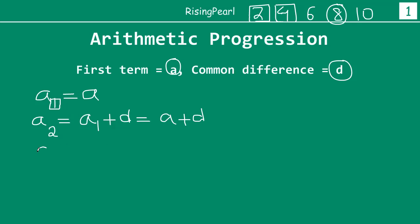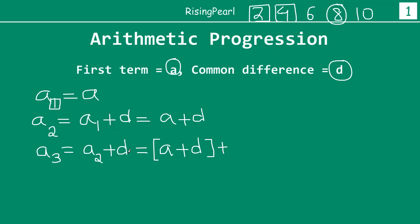Now let's move on and write the third term. To get the third term, we take the second term and add the common difference to it. The second term is A plus D, so A3 equals (A plus D) plus D, which becomes A plus 2D.